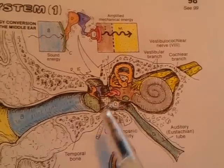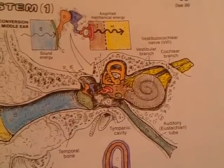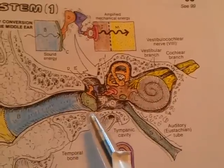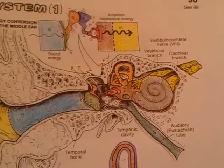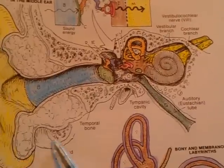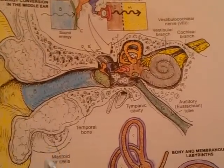The posterior wall is also called mastoid wall. It presents the entrance into the mastoid antrum, which is continuous with mastoid air cells contained in the mastoid process.